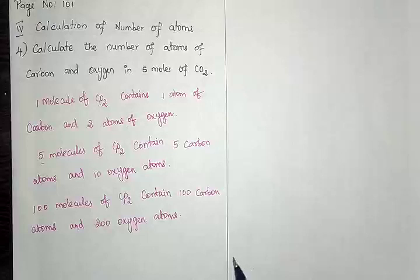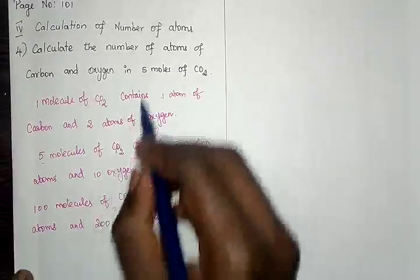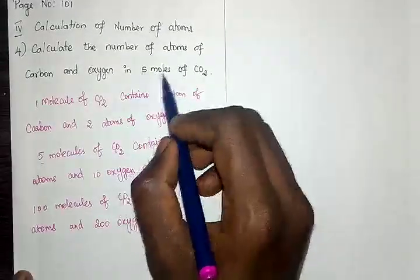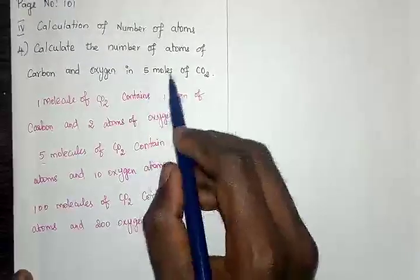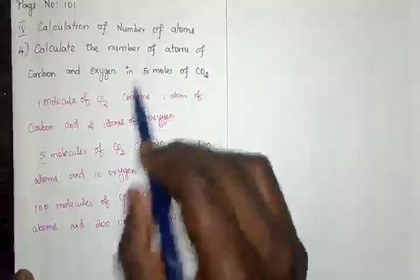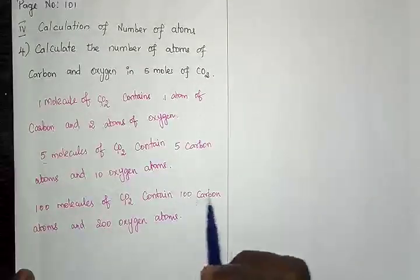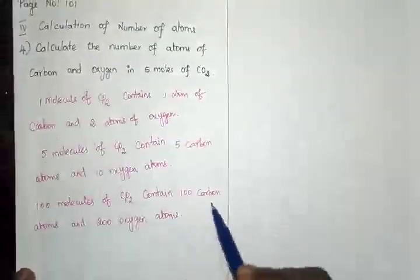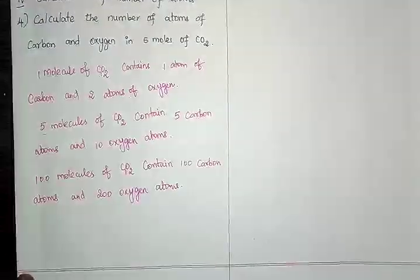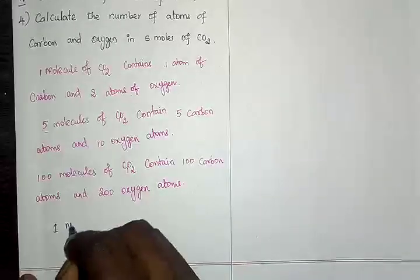So I need to know how many molecules five moles have. They didn't give the number of molecules directly — they gave five moles. If I convert five moles into number of molecules, I can easily calculate the number of carbon atoms and number of oxygen atoms present in five moles of carbon dioxide.